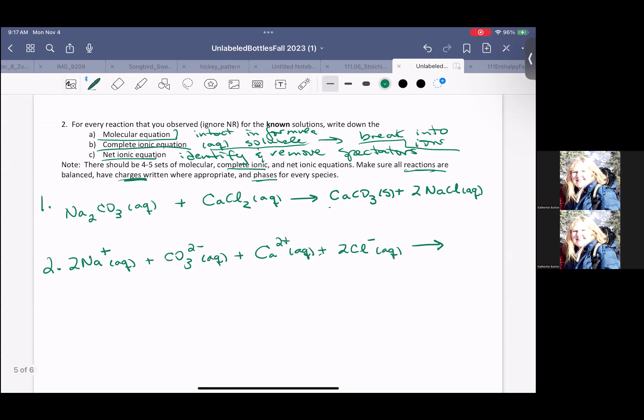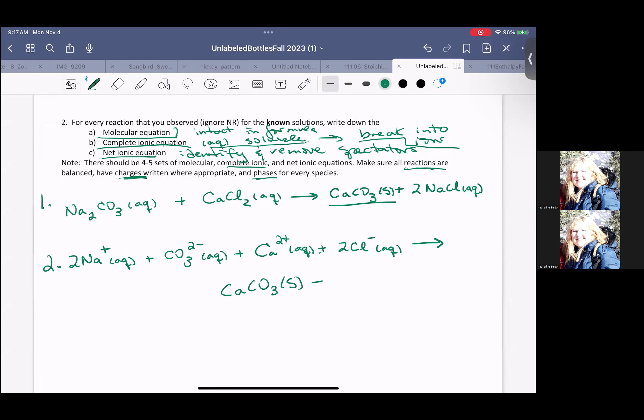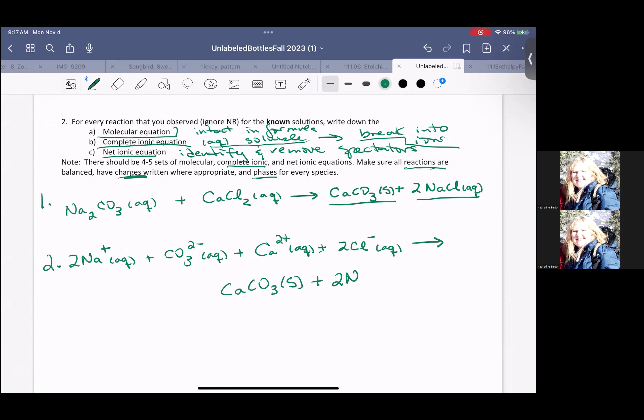So if I look at my product side, calcium carbonate is our precipitate. It is not soluble. It is a solid. So I'm going to write it as a solid and I'm going to react it or put here my plus, my sodium chloride, all group one compounds are soluble. So I'm going to leave that as that 2 Na+ aqueous plus 2 Cl- aqueous. And now I have my complete ionic equation.